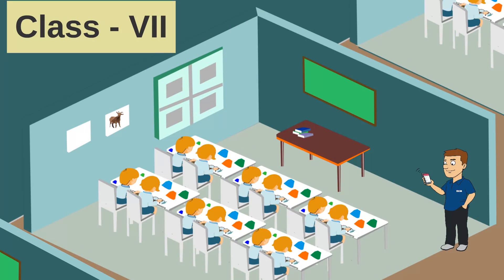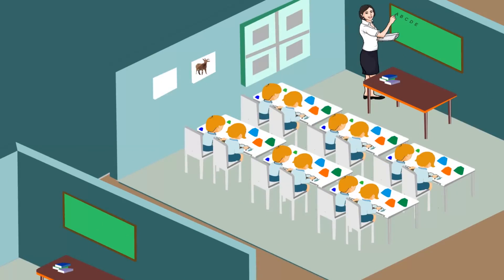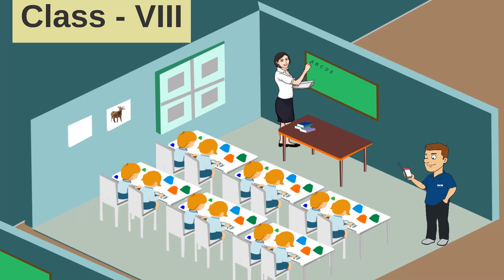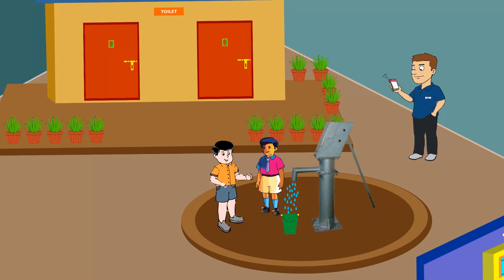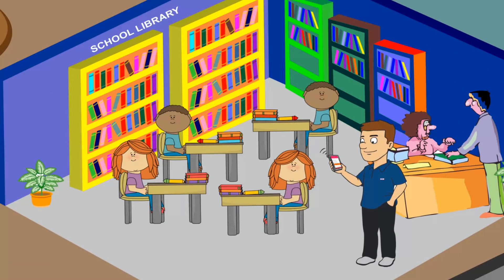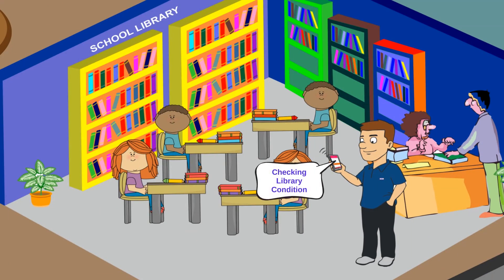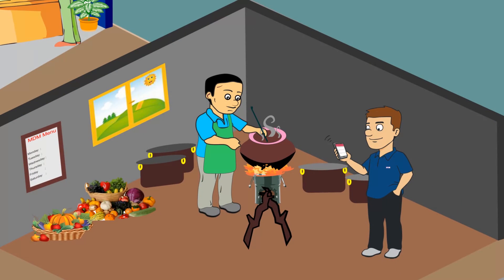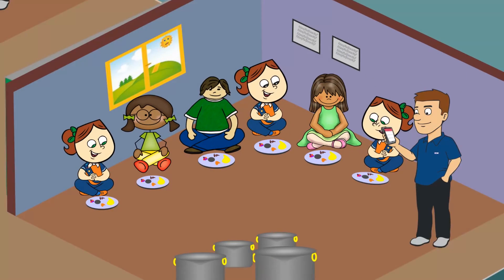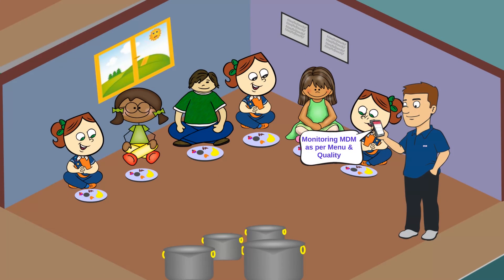Similarly, he checks other classrooms. CRP examines toilet conditions, drinking water facilities, and snaps their pictures. He examines library conditions and checks whether food is being cooked as per the midday meal scheme, sending its picture. He also checks the menu and quality of food.